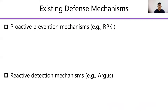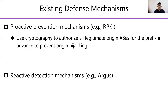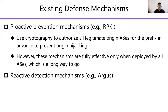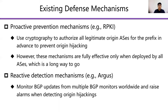Existing Origin Hijacking defense mechanisms can be divided into two types: proactive prevention and reactive detection. Proactive prevention mechanisms usually use cryptography to authorize all legitimate origin ASes for the prefix in advance to prevent Origin Hijacking. However, these solutions are fully effective only when deployed by all ASes, which is a long way to go. Therefore, many networks prefer to rely on reactive detection mechanisms, which monitor BGP updates from BGP monitors worldwide and raise alarms when detecting route hijacking.